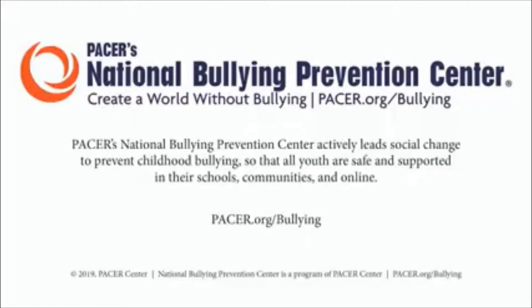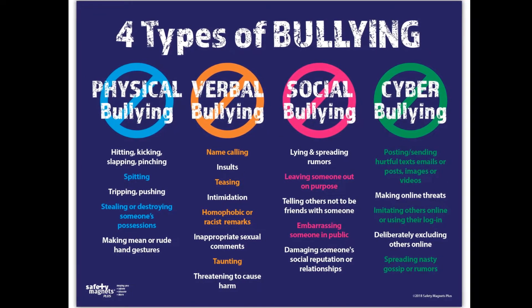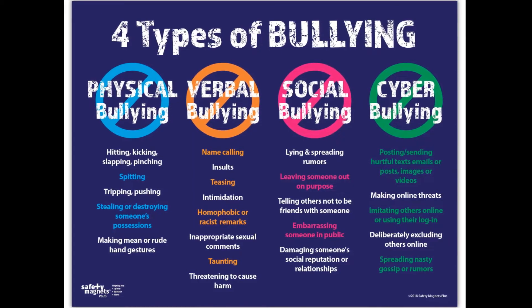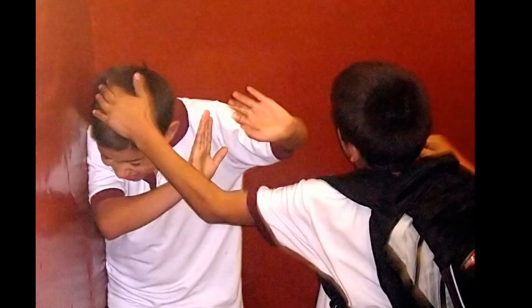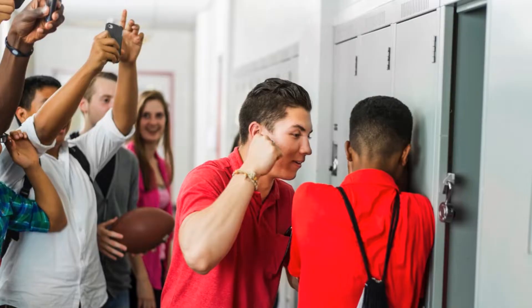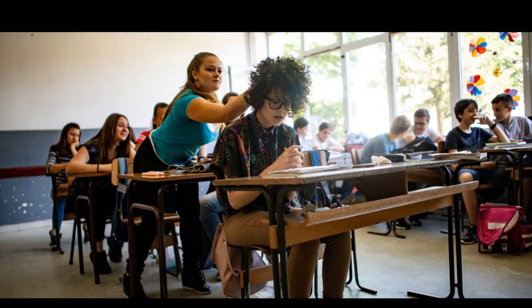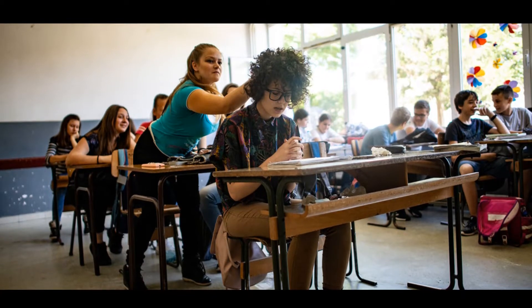Now let's talk about the different types of bullying. Today we're going to talk about four specific types: physical, verbal, social, and cyberbullying. Physical bullying involves hurting a person's body or possessions. Physical bullying can include hitting, kicking, pinching, spitting, tripping, pushing, taking or breaking someone's things, and making mean or rude hand gestures.